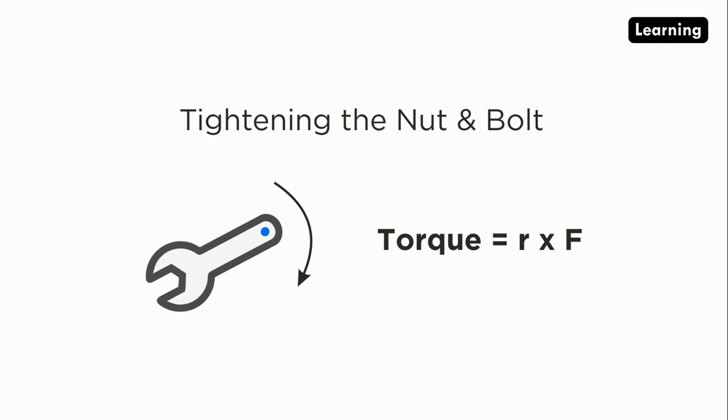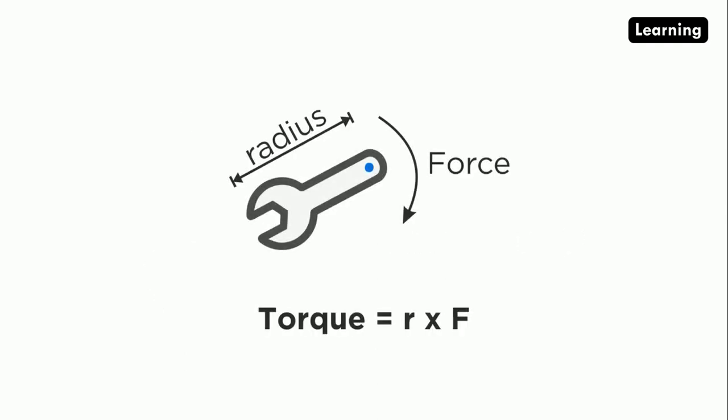We give the radius here. Likewise, the torque is equal to radius times force. Force is what we are applying by our hand. The radius is the distance between the pivot point and the bolt.